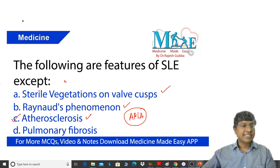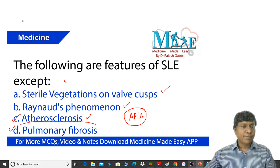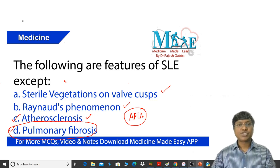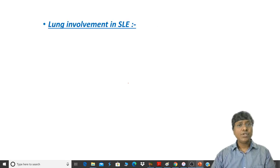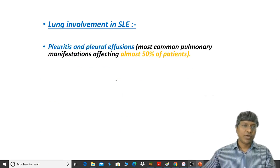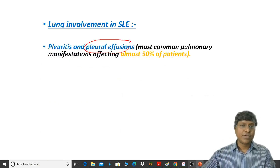What is left out is pulmonary fibrosis. Pulmonary fibrosis is the one which is not seen in patients with SLE. Taking the lung involvement in SLE — lung involvement is in the form of serositis, which presents as pleural effusion.